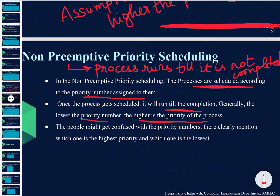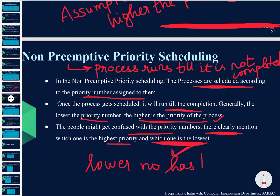Generally, the lower the priority number, the higher is the priority of the process. People might get confused with priority numbers, but it is clearly mentioned: the one which has a lower number has a higher priority.